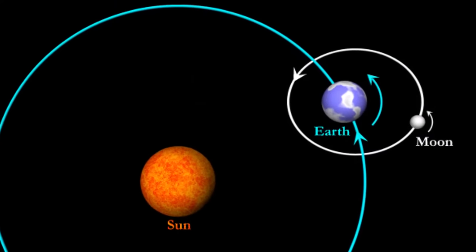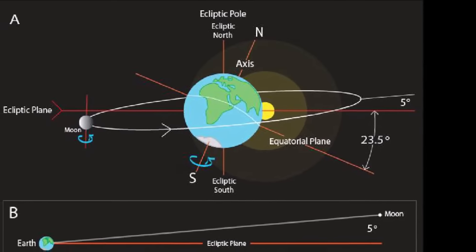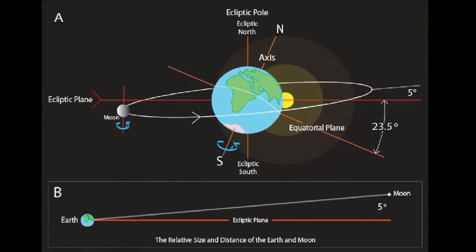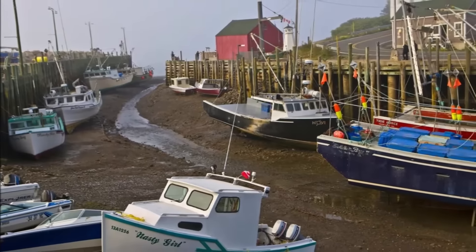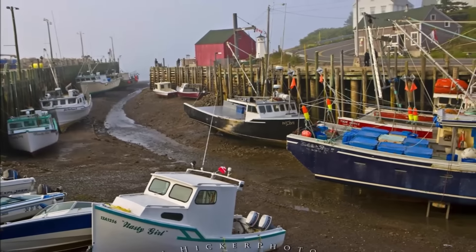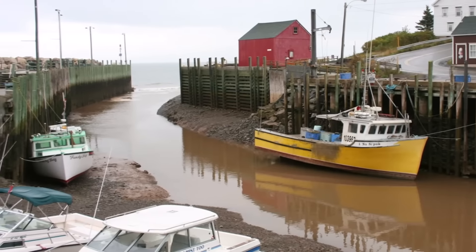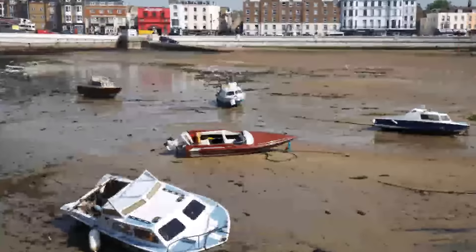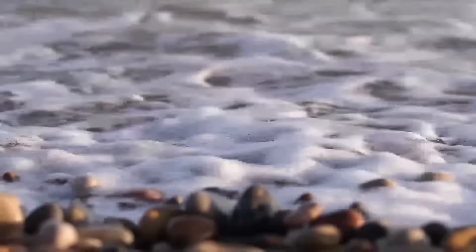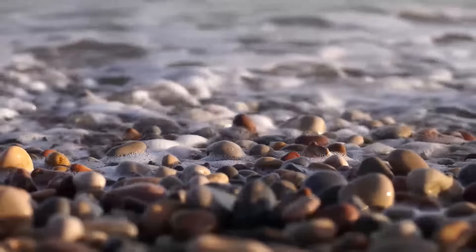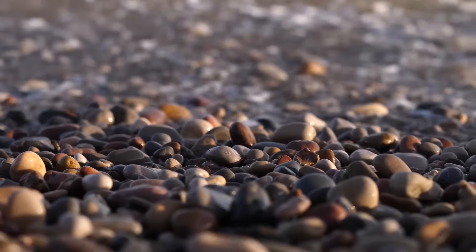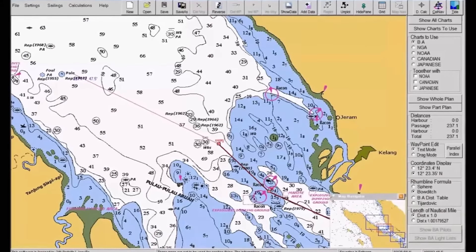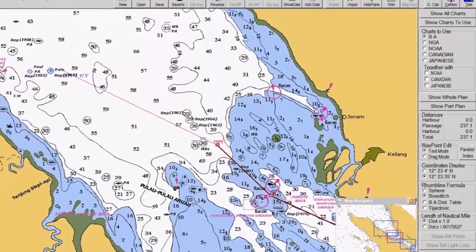Welcome back in the third part of this video series. In my previous two videos, we have discussed various phases of the moon and how the moon has a direct effect on the tides. We have also seen various types of tide that happen around the world. Today, we will see how tide affects our measurement of depth, from where we will measure tide, and how to apply the tide in our depth recordings. We will also learn what the depths written in navigation charts means.